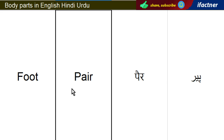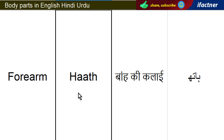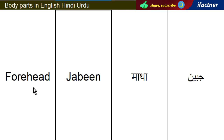Pair — Feet. Haath — Forearm. Jahbeen, Jabeen — Forehead.